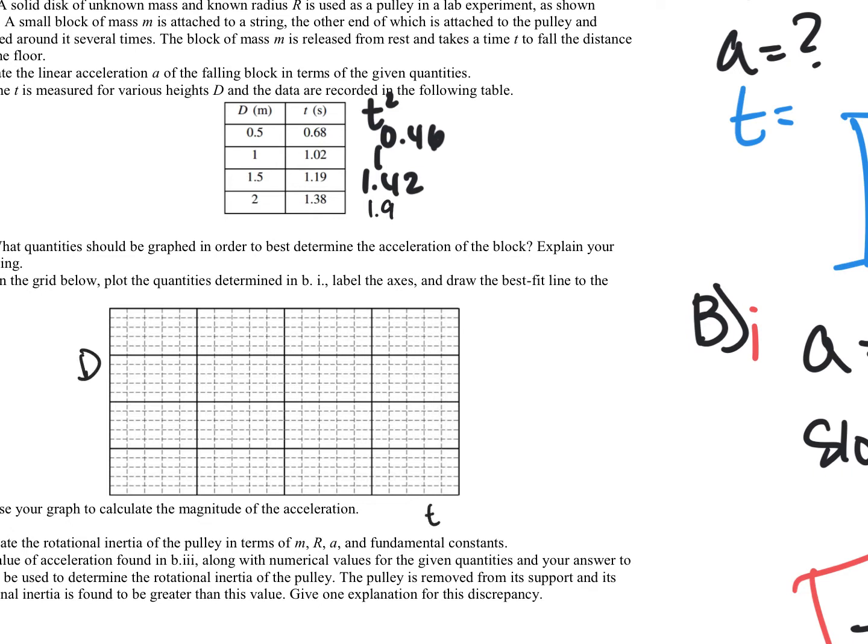So now we're going to do D versus T squared. So this is going to be distance, that's half a meter increments. So that's one meter, that's 1.5 meters, that's two meters. And over here our time data, we're going to go from roughly 0 to 2 seconds. So that's half a second, or second squared I should say. That's one second, that's 1.5, and that's two seconds squared. So we're going to start off at 0.5 and 0.46, so somewhere right in here. Then we're going to go 1 to roughly 1. We're going to go 1.5 over to 1.42, so right there. And then we're going to do 2 to 1.9. And there is our nice linear graph.